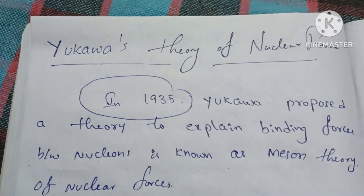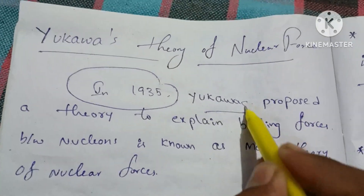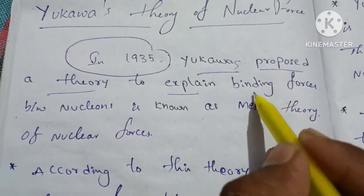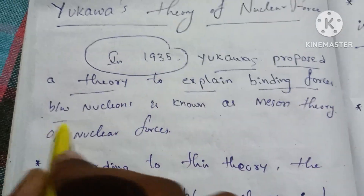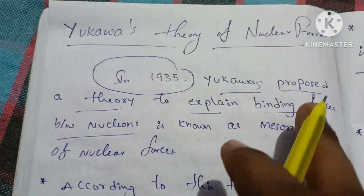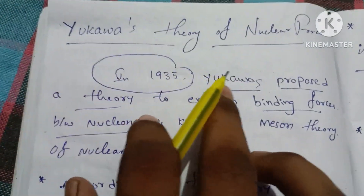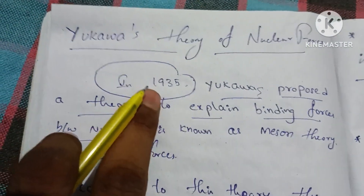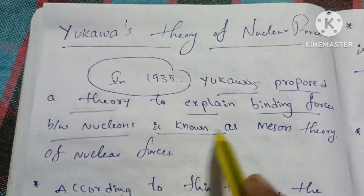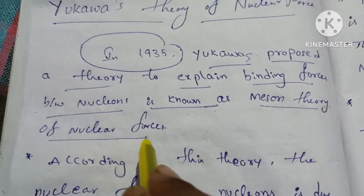In 1935, Yukawa proposed a theory to explain binding forces between nucleons. This is known as the meson theory of nuclear force.